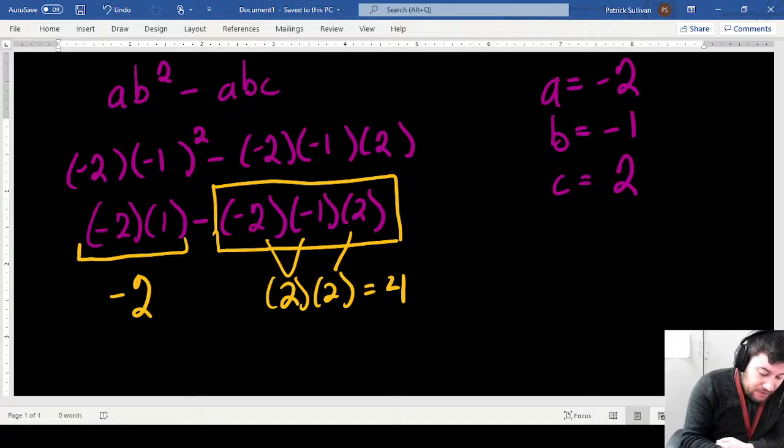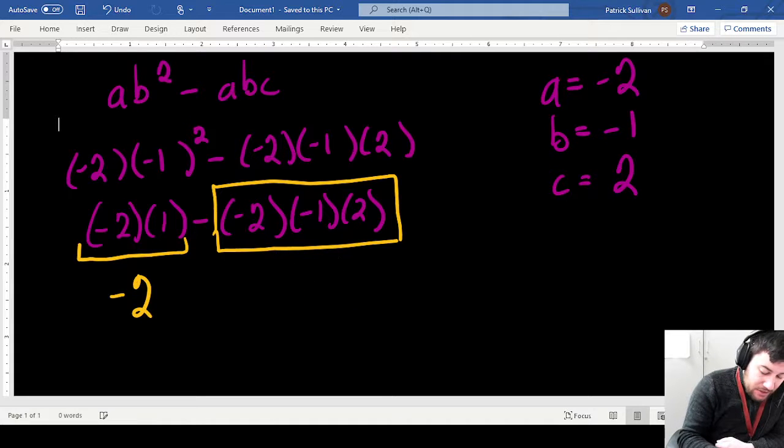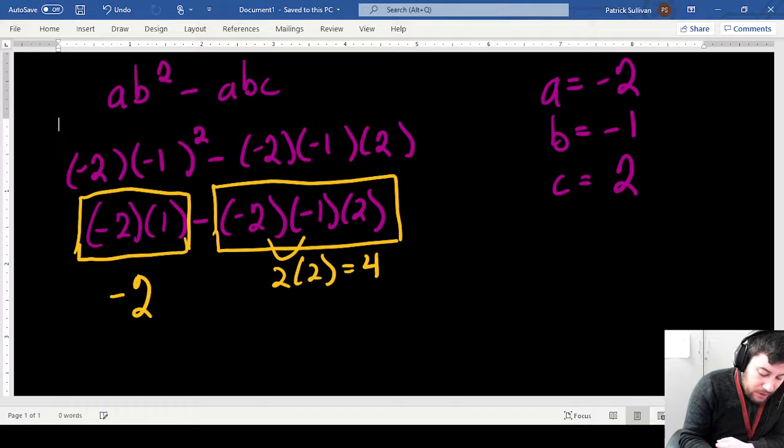So again, instead of trying to do all of this in your head, kind of break it down into smaller parts. What I did was this first part right here, negative 2 times 1 is negative 2. This second part here that I boxed off, negative 2 times negative 1 is 2. Bring down the other 2, 2 times 2 is equal to 4.